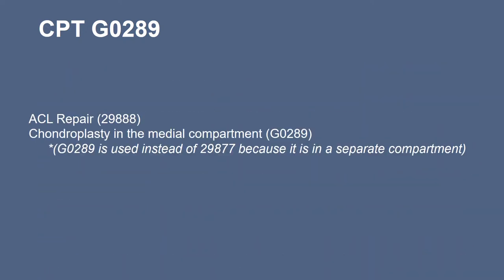An example is when an ACL repair 29888 is done with a chondroplasty in a different compartment — in this case the medial compartment. G0289 is used instead of 29877 for the chondroplasty because it is in a separate compartment. If you were to use 29877, it would deny as global to the 29888 ACL repair.